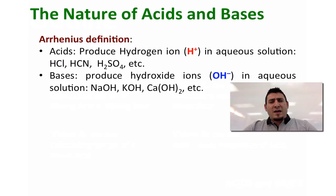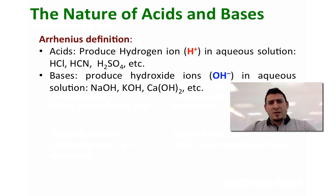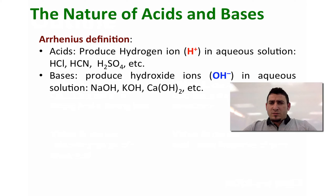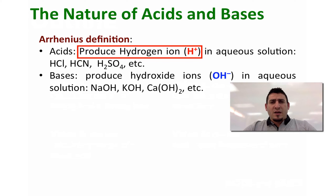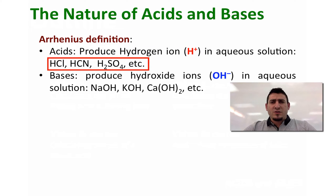For acids and bases there are two main definitions. One was given by Arrhenius and another was given by Brønsted and Lowry. Arrhenius said that any molecule or compound that generates or produces H⁺ ions in solution is considered an acid, such as hydrochloric acid, hydrocyanic acid, and sulfuric acid.